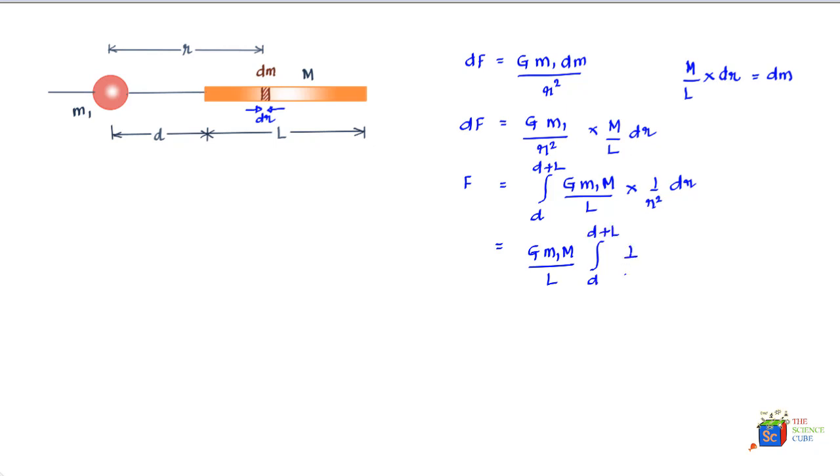And if you simplify this, what you will get is this equals G*m1*M/L times, as you apply the limits, 1/(L+d) - 1/d.